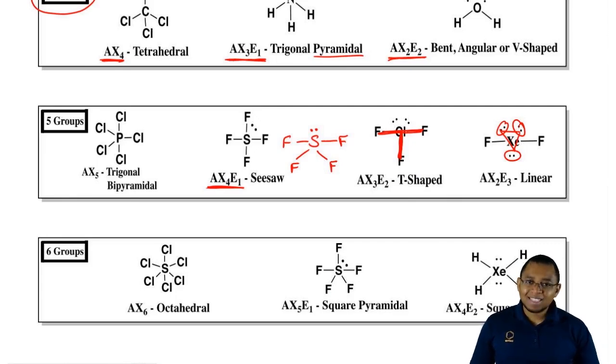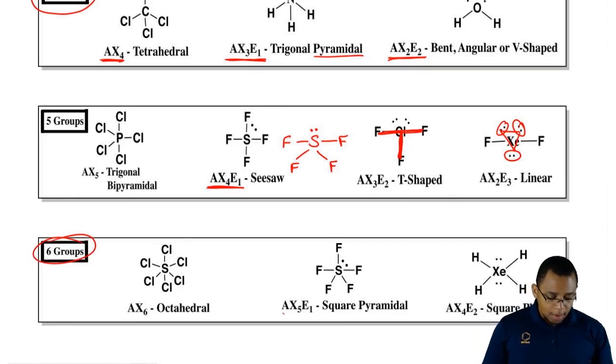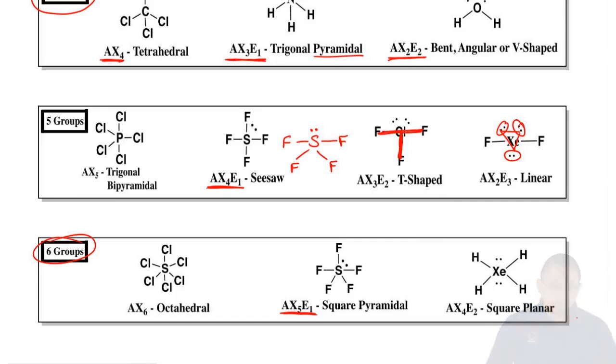Then if you're AX6, well if you have six groups, you can be AX6 or you're octahedral. If you have one lone pair, you're AX5E1 and your name is square pyramidal. Then you could be AX4E2 and there you would be square planar, kind of shaped like a square.